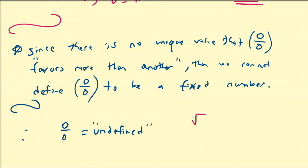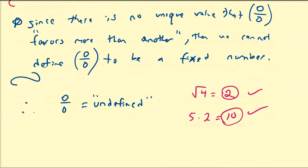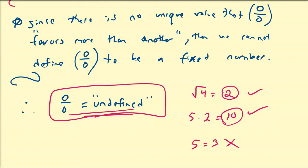Other expressions, for example the square root of four, that's going to be equal to two. And five times two, that's going to be equal to ten. These answers exist, are fixed, and do not give contradictions to one another. But defining zero divided by zero to be something does not really give us any leeway in terms of advantages. So it's best to leave zero divided by zero as undefined unless you have a real reason for doing so.